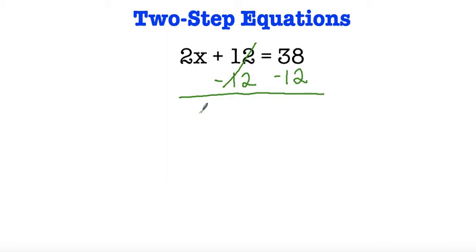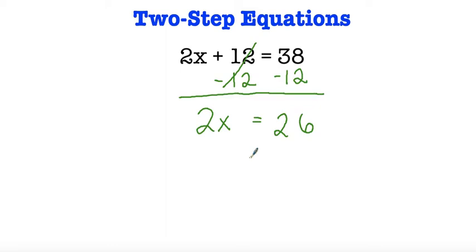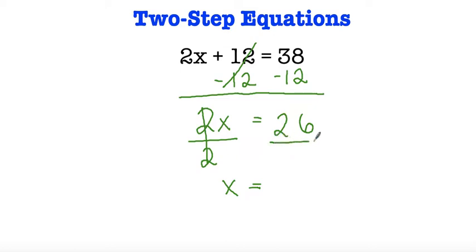On the left side I'm left with 2x. And on the right side I have 38 minus 12: 8 minus 2 is 6, 3 minus 1 is 2, so 2x is equal to 26. Now I know that 2x is the same thing as 2 times x, so I could divide by 2. 2 divided by 2 is 1x, or simply x. And whatever I do on the left side I have to do on the right side, so 26 divided by 2 is 13. So x is equal to 13.